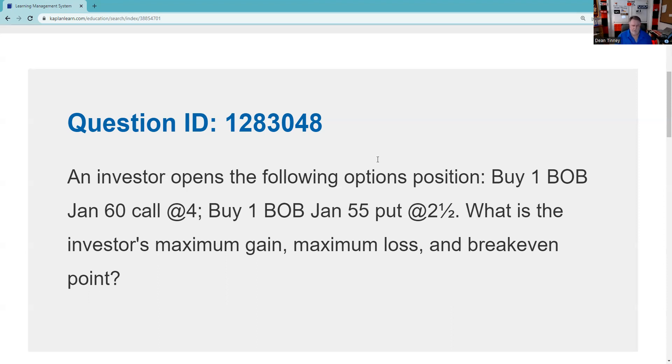This is QID 1283048. An investor opens the following positions. So this investor is either going to be doing an opening purchase or opening sales, or maybe a buy and a sell, maybe it's a net, we'll see. Buy one BOB January 60 call at four.